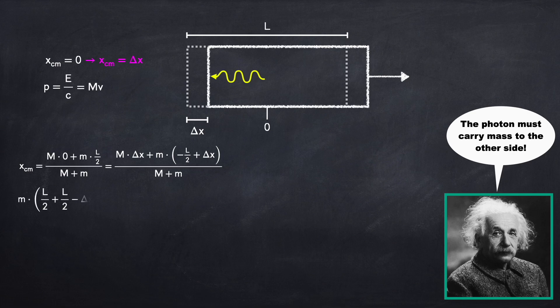And we're going to be left with little m times L over 2 plus L over 2 minus delta x equals big M times delta x. L over 2 plus L over 2 is just L. So we can now divide both sides of the equation by L minus delta x to get that the mass of the photon is the mass of the box times delta x divided by L minus delta x.